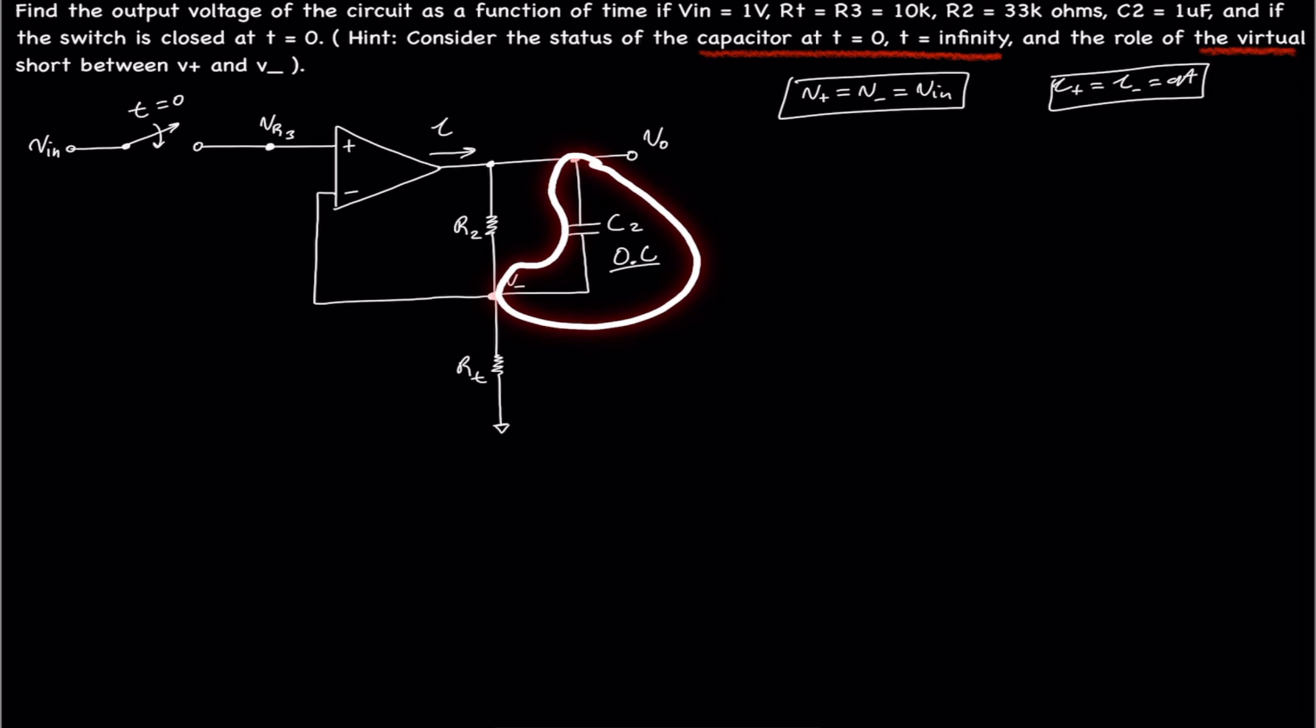And in here, we see if we cut the capacitor out, we see we have a normal non-inverting op-amp configuration. We then can find the voltage for the op-amp when the capacitor has a voltage drop across it, and its open circuit. And that is going to equal the voltage when the cap is fully charged.